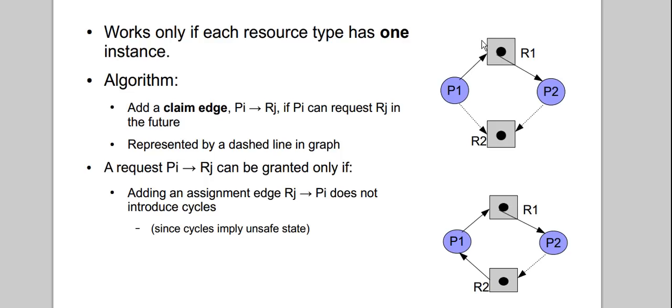When a dot from a resource box points towards a process circle, it means that resource has been allocated to that process. Whenever a process has all resources allocated to it, it has all the necessary means to complete execution — all the raw materials required. At that point the process can be executed fully and it can release the resources it's holding.